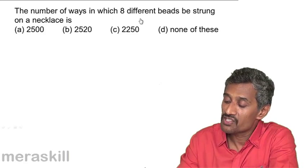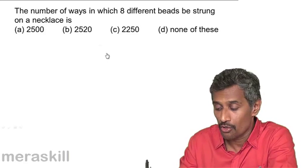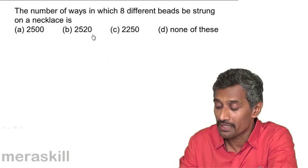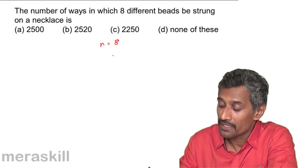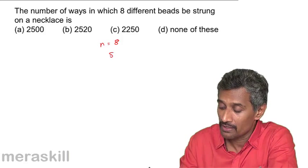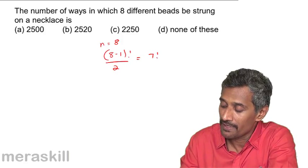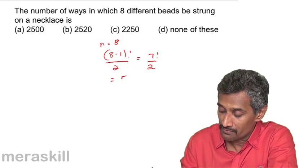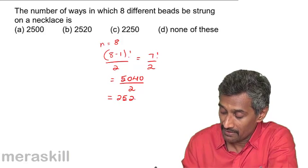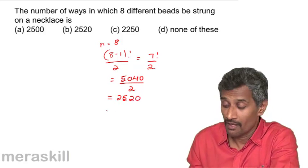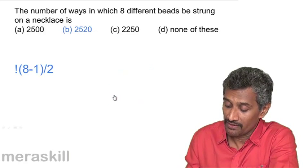Similarly, number of ways in which 8 different beads can be strung on a necklace. Whether it's clockwise or anticlockwise, both mean the same. So n is 8 here. So the number of arrangements is going to be (n-1), (8-1)! That is 7!/2 which is 5040/2 which is 2520. So among these, this is the right answer.